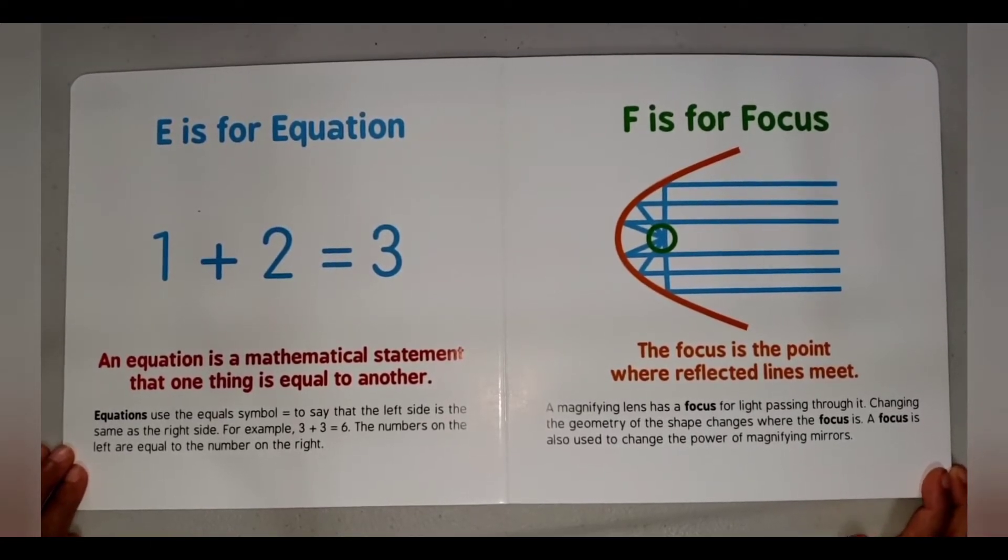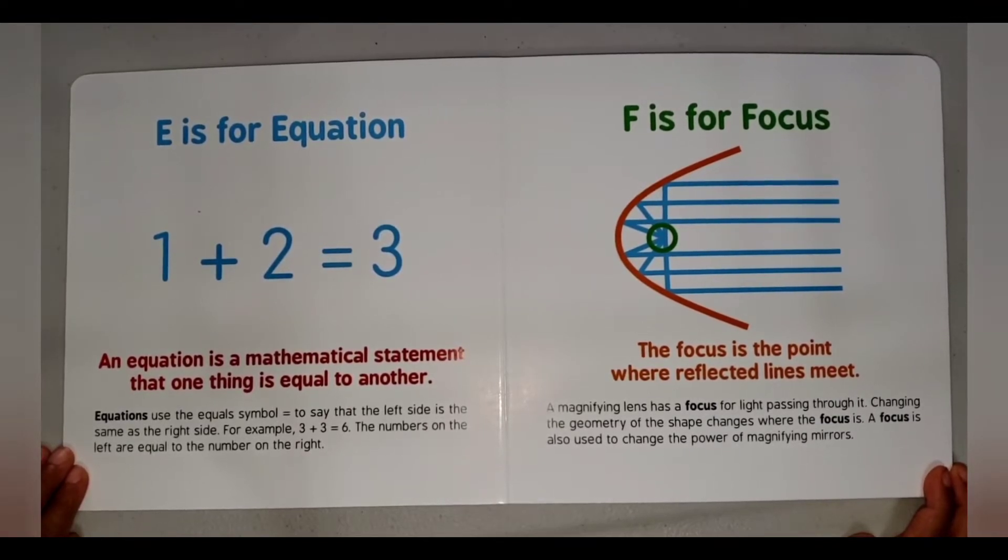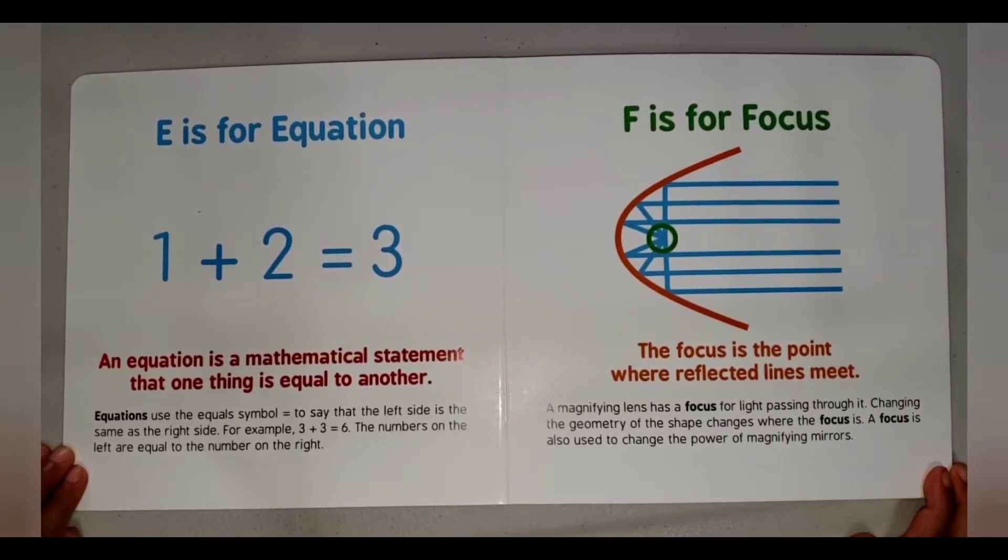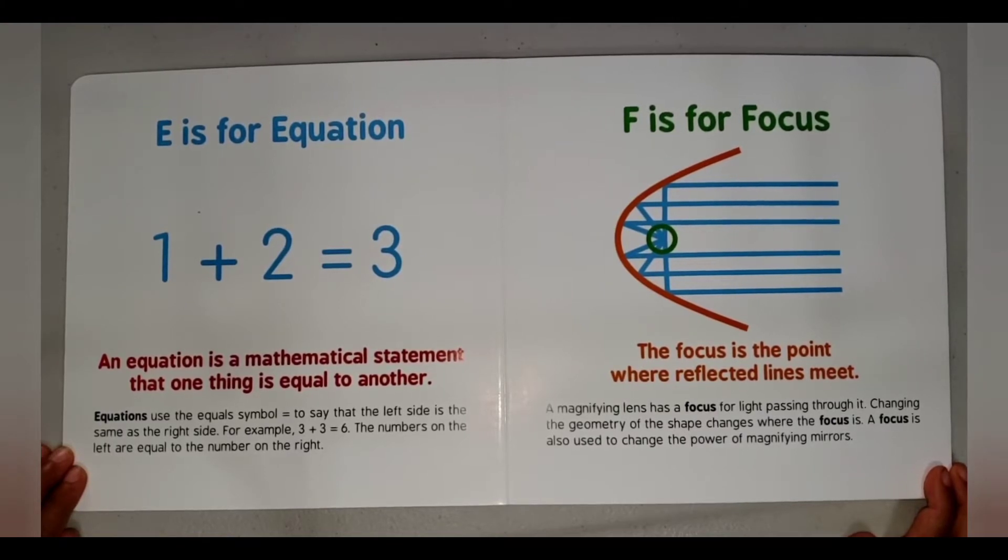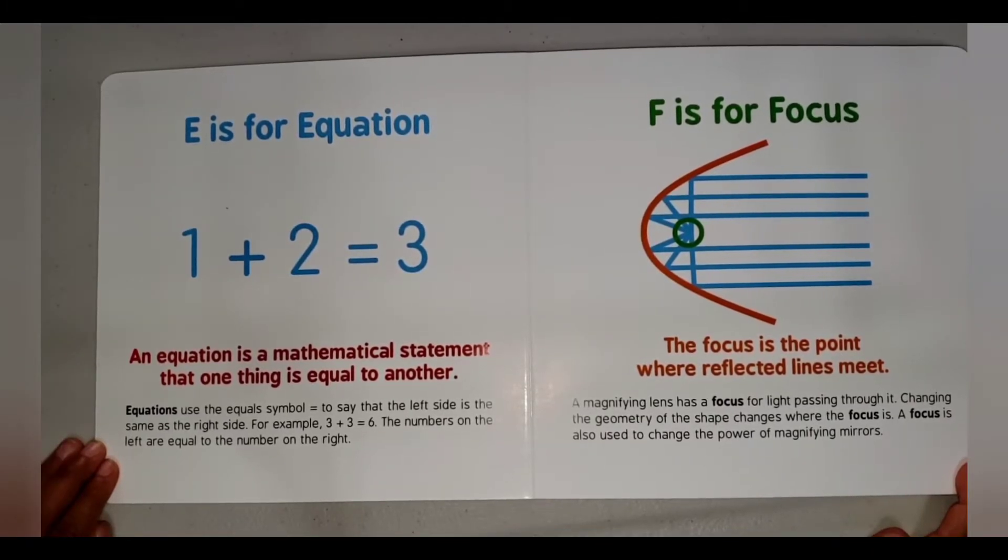F is for Focus. The focus is the point where reflected lines meet. A magnifying lens has a focus for light passing through it. Changing the geometry of the shape changes where the focus is. A focus is also used to change the power of magnifying mirrors.